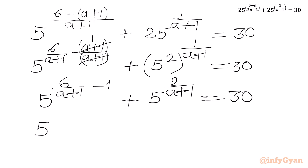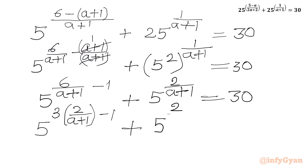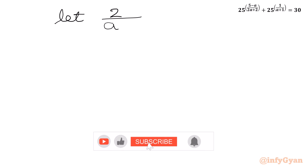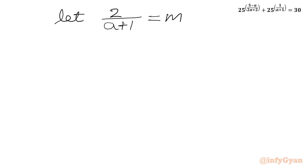Now I can write 6 as 3 times 2, so we have 5 to the power 3 times 2 over (a plus 1) minus 1, plus 5 to the power 2 over (a plus 1), equal to 30. Now we can assume 2 over (a plus 1) equal to m. So our equation becomes 5 to the power 3m minus 1, plus 5 to the power m, equal to 30.